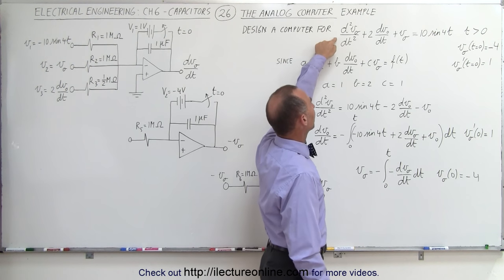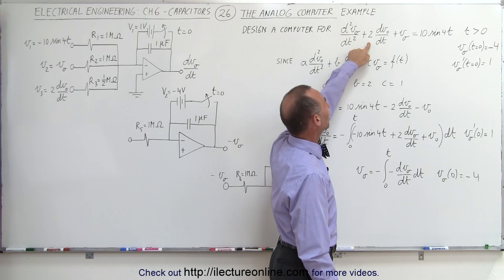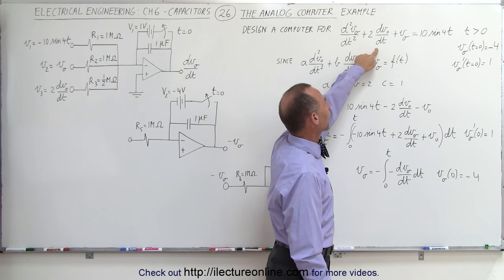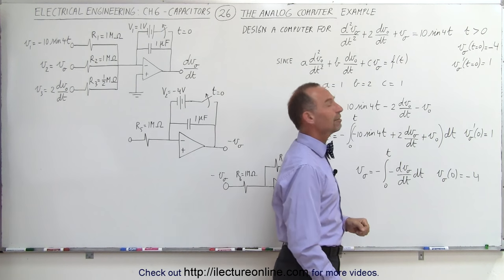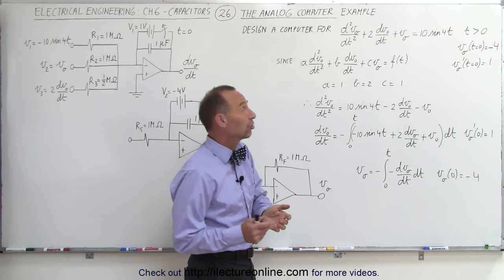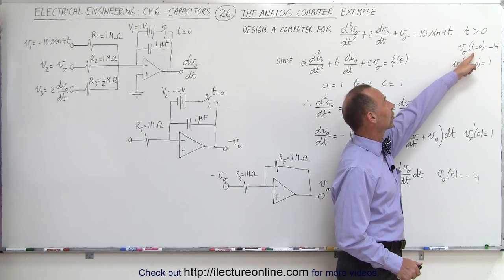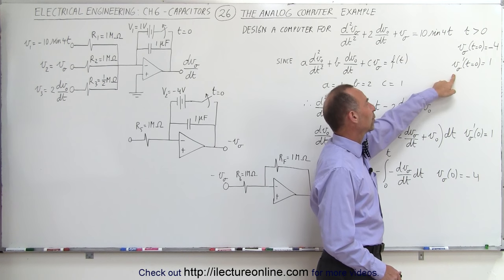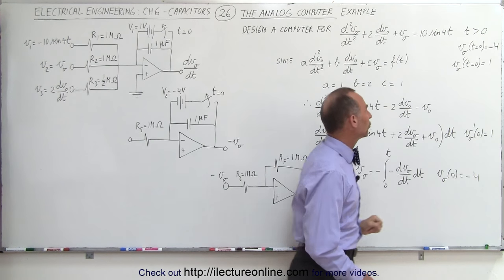The second derivative of the output voltage with respect to time plus twice the first derivative of the output voltage with respect to time plus the output voltage equals 10 times the sine of 4t, for all time greater than zero. The initial conditions are: the output voltage at t=0 is negative four, and the first derivative of the output voltage at t=0 equals one.